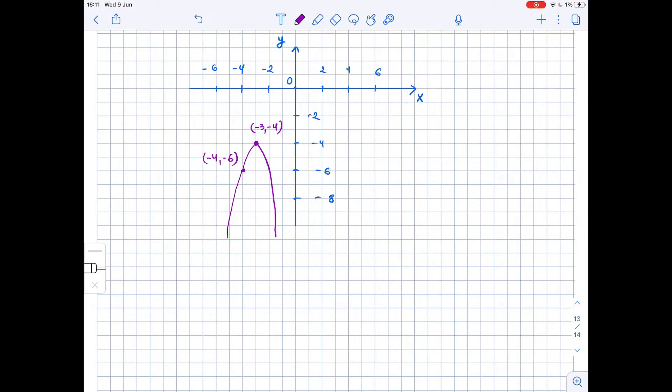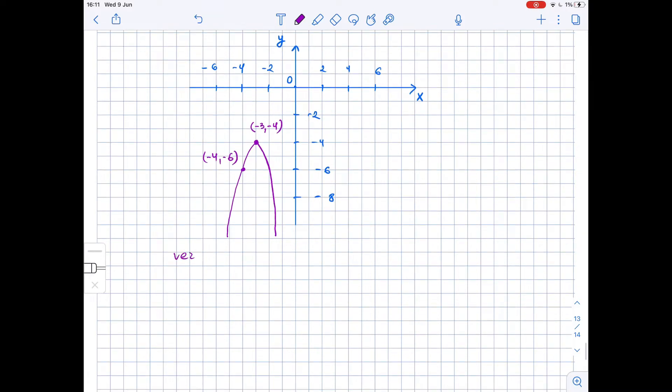We need to find the equation of the quadratic function G whose graph is shown. From the graph we see that the vertex of the parabola is at point (-3, -4).